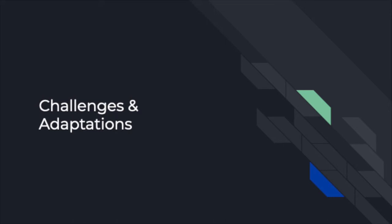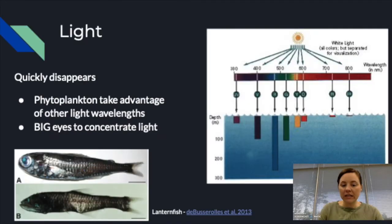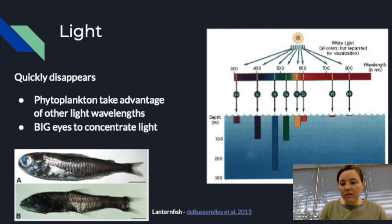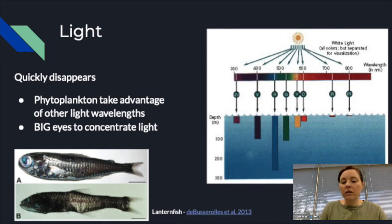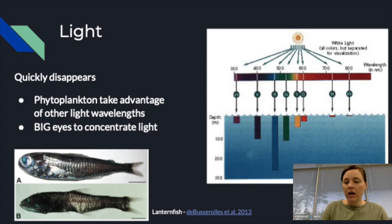Here are some challenges and adaptations the pelagic zone presents to organisms. The first is light — it very quickly disappears, with different wavelengths absorbed at different depths. The red wavelength is the first to go. Because of this, many organisms in the mesopelagic and lower epipelagic are red in color, since that wavelength doesn't penetrate and predators can't see that color at depth. Chlorophyll-containing organisms absorb red light wavelengths and reflect green.